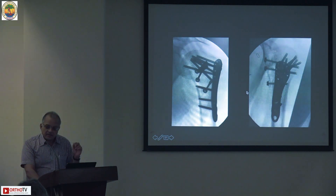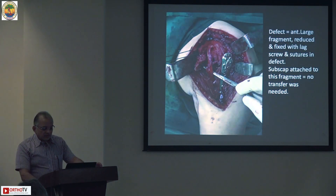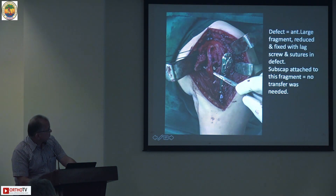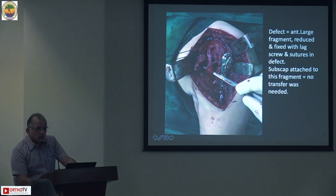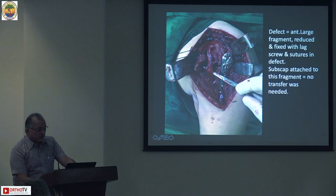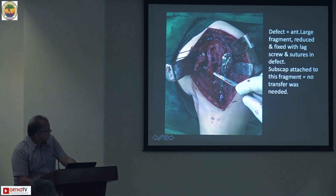Here you can see the defect and the biceps tendon. The plate has been fixed because the patient also had a humeral neck fracture, so the head is reduced in the glenoid. At the end you can see there is a large Hill-Sachs defect medially along with the lesser tuberosity.